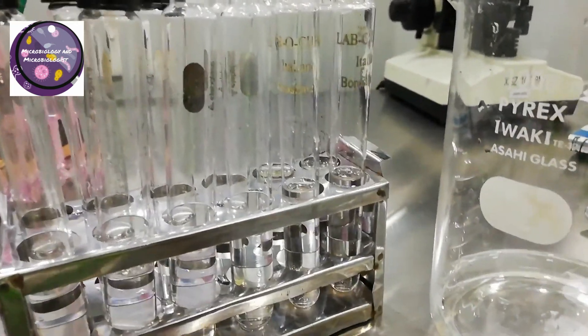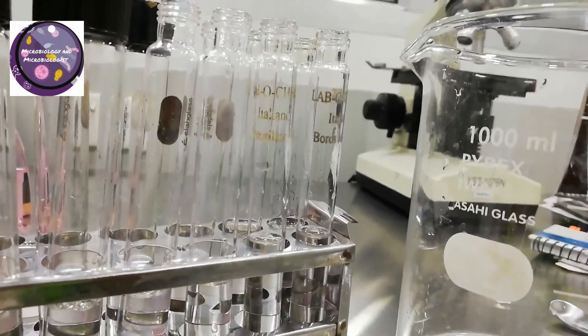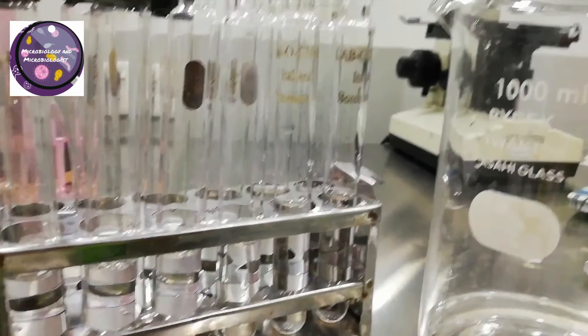After that, I will sterilize all these tubes in an autoclave at 121 degrees Celsius for 15 to 20 minutes, and we'll use it for culture suspension or for serial dilution.